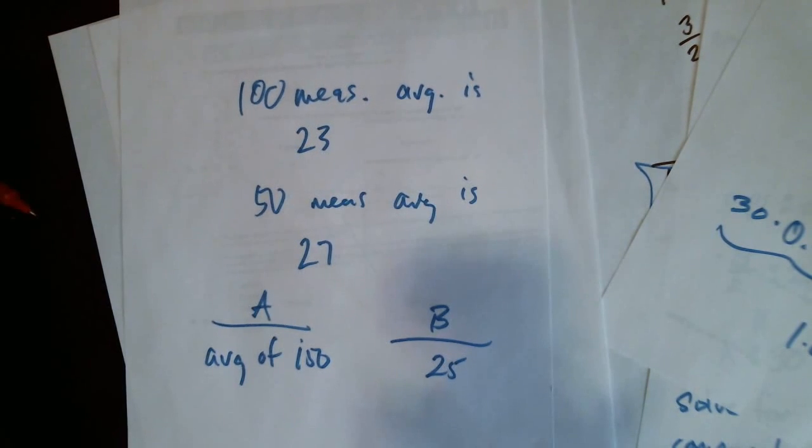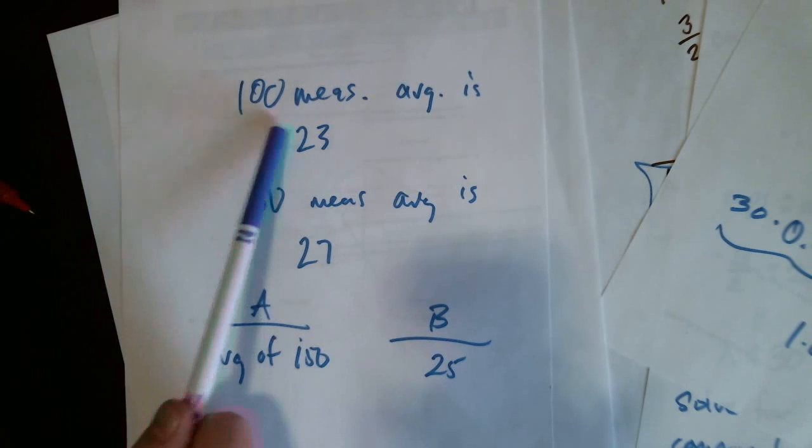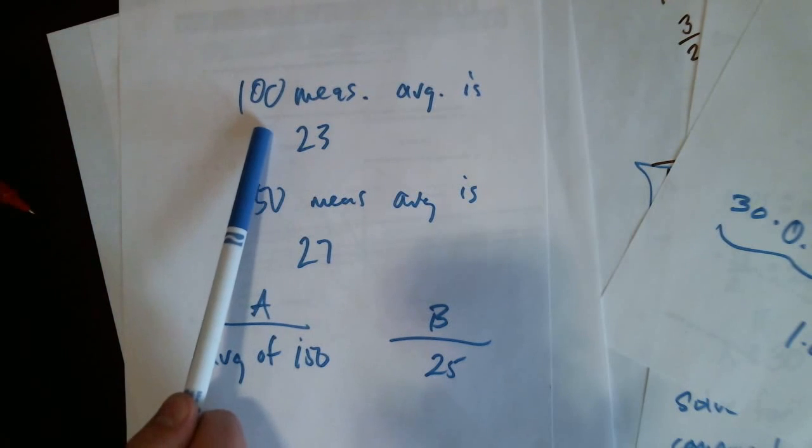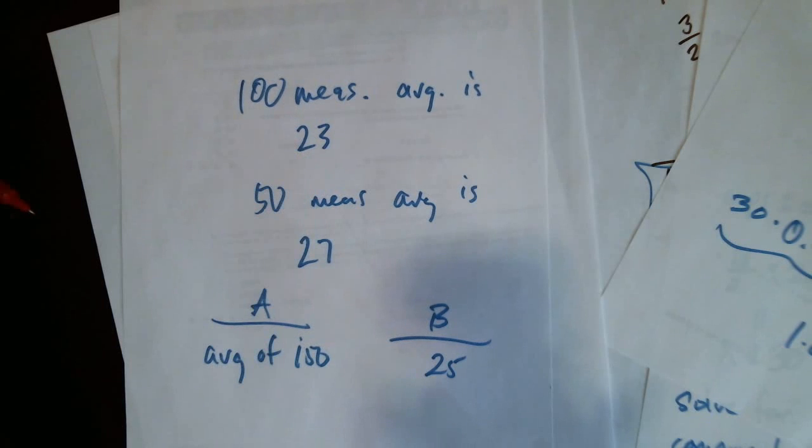So I'm going to reframe this in narrative format. Let's say your goal is an average of twenty-five. You want to score an average of twenty-five on your test. And you've taken a hundred tests and you've averaged twenty-three. What do you need to do to bring your average up to a twenty-five? You need to score higher.